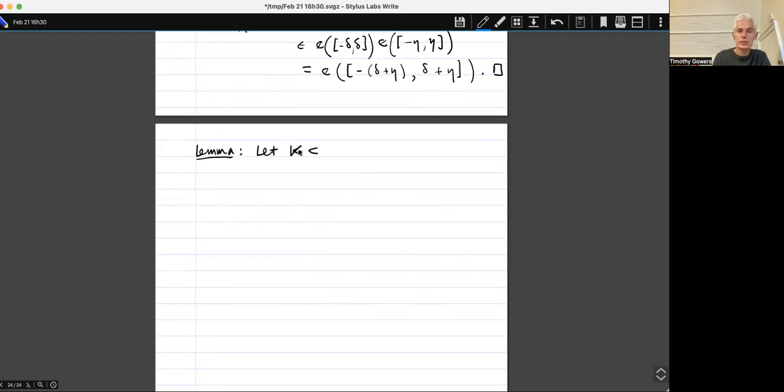So let K, subset, or let N be prime and let K as a subset of Zn hat, the dual group, be a set of size, let's call it non-zero. Actually I think I, non-zero. I need that in the next lemma, but anyway, not, it's not really important one way or the other. Characters, size of size little k.